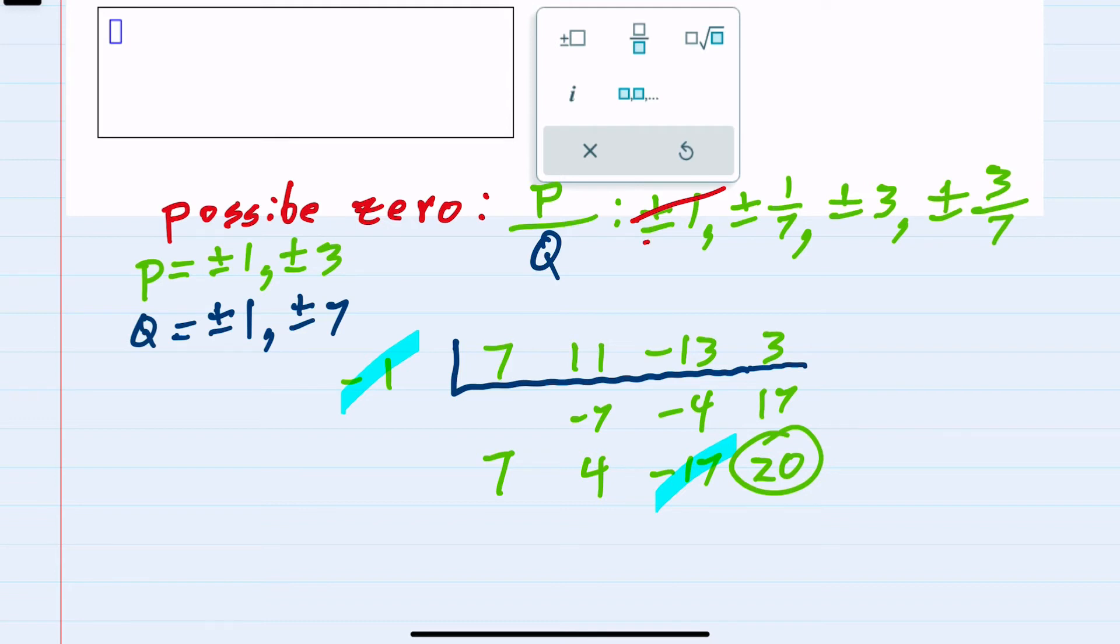So negative one is not a factor, and we would continue this process eliminating possible zeros as we go. And if we continued moving through this list, we would eventually get to three sevenths.